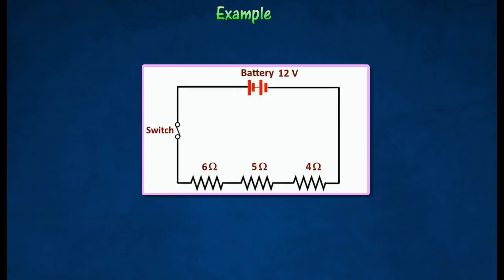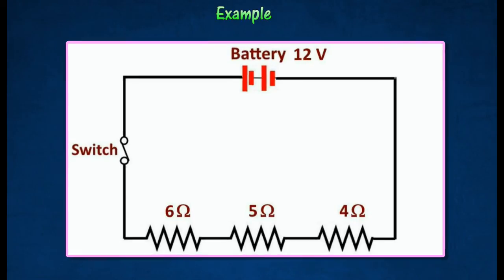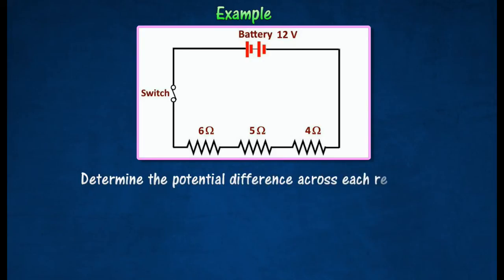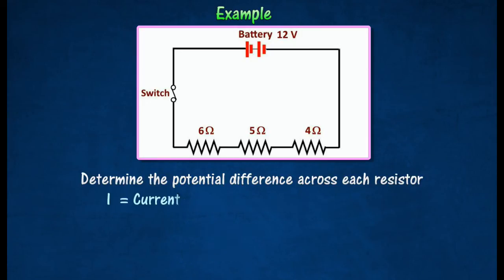Three resistors are connected in series, as shown in the diagram. If placed in a circuit with a 12-volt power supply, determine the potential difference across each resistor. Let R be the effective resistance of the 6-ohm resistor, 5-ohm resistor, and the 4-ohm resistor. Thus, the effective resistance is equal to the sum of each resistance. The electrical current through each resistor is the same.